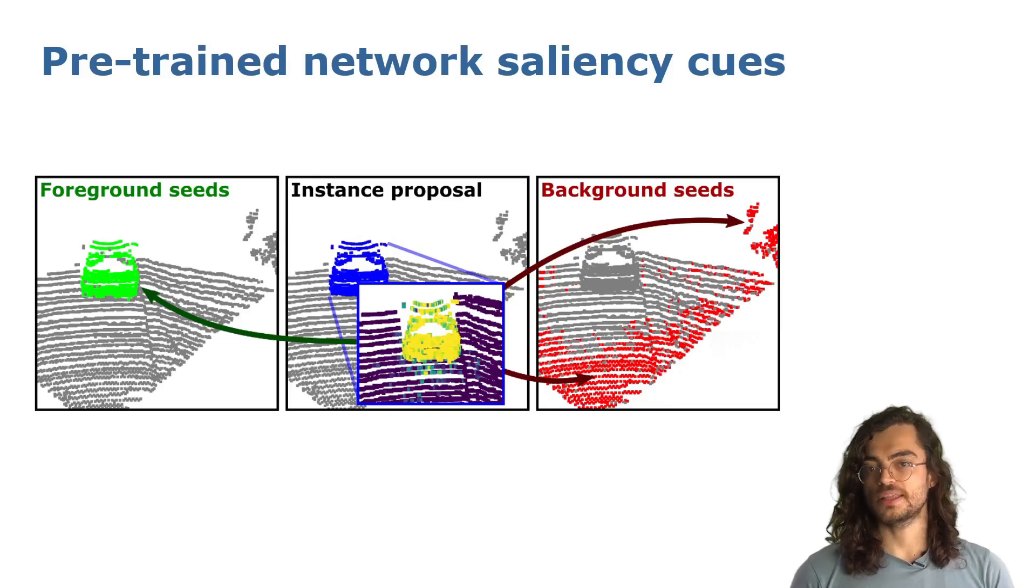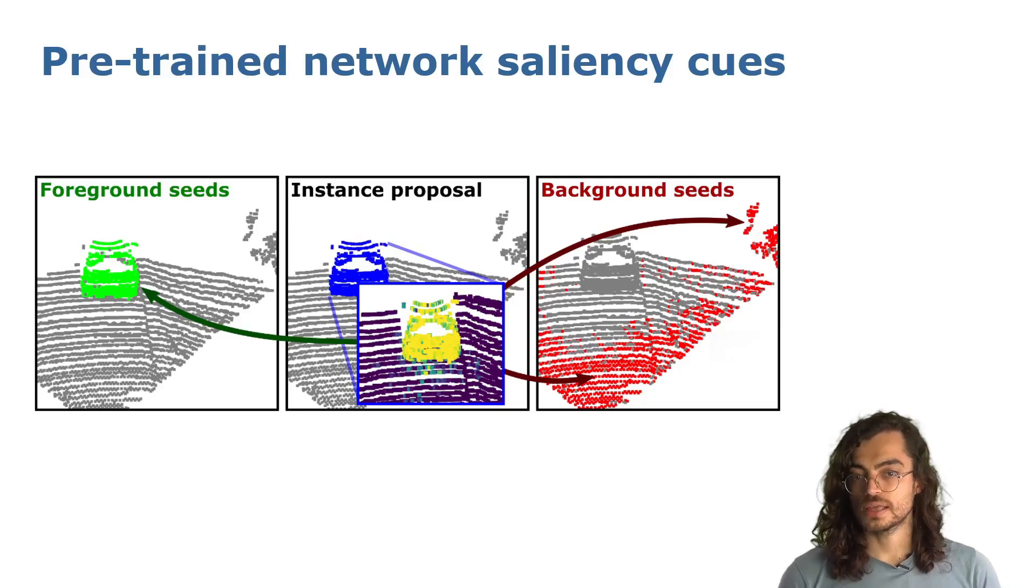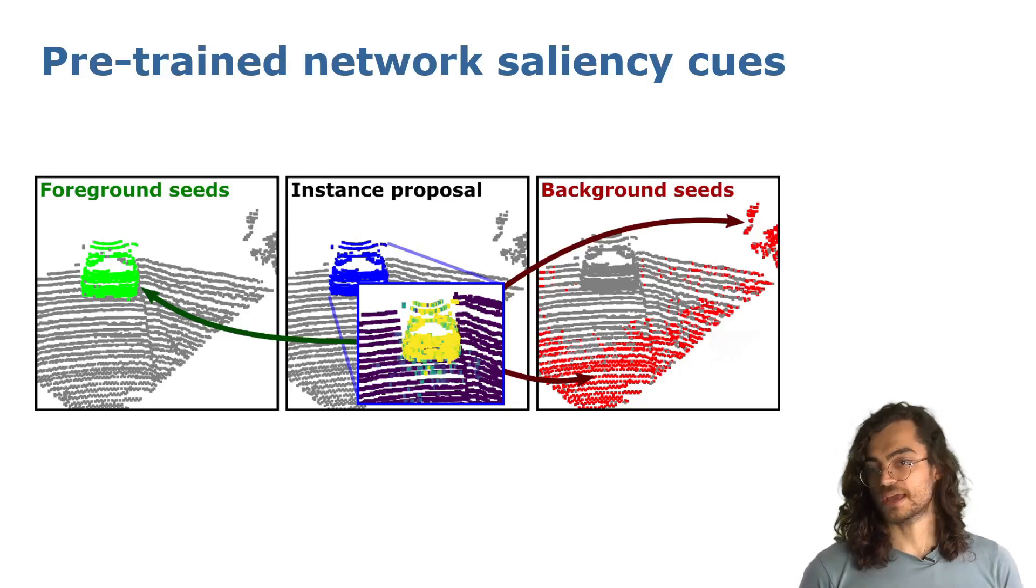And as shown in the image, the salience computed by the network over the proposal points highlight points most likely to belong to the instance. Therefore, we take points with the highest salience as foreground seeds and points with the lowest salience as background seeds.